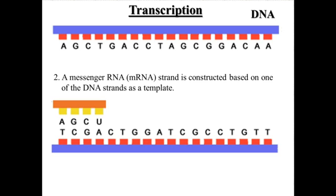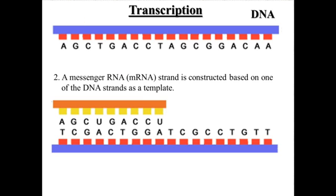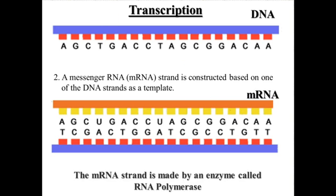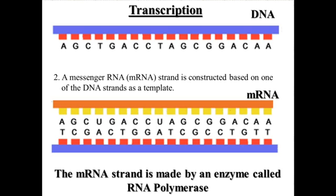This process continues on down the line: G goes with C, A goes with T, C goes with G, C goes with G. Where there's an A on the DNA, we get a U on the mRNA, A with T, G with C, and so on. One at a time, the RNA nucleotides are added to that growing strand.